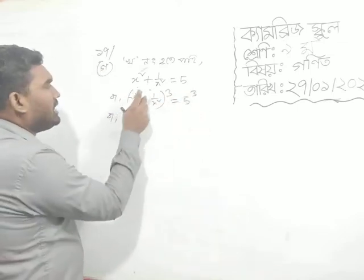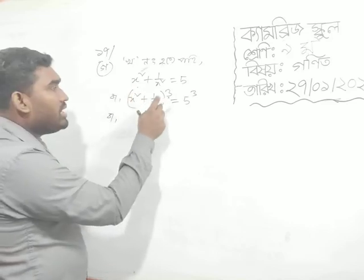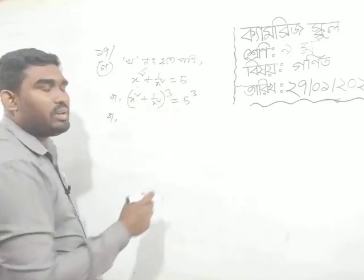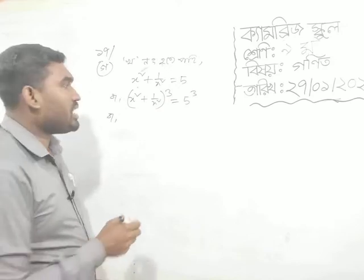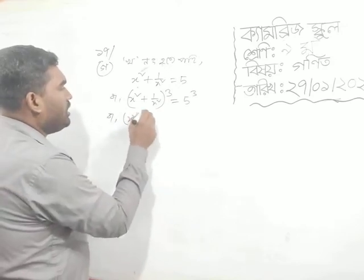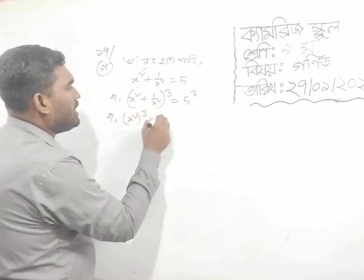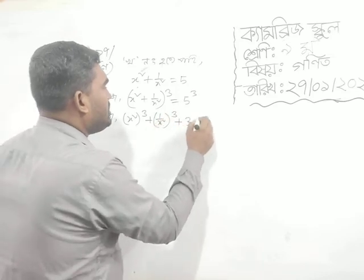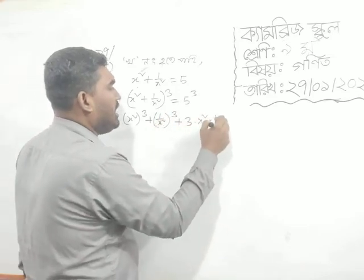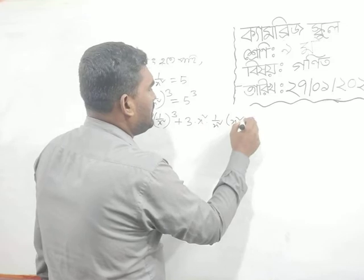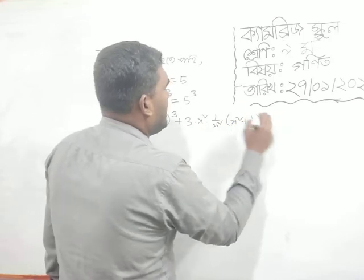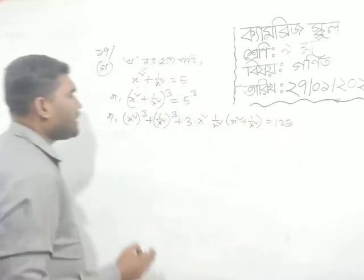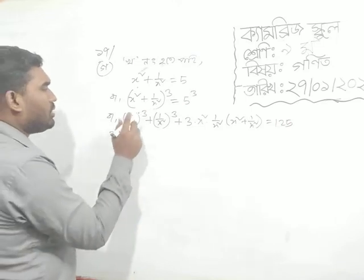We said A cubed plus B cubed equals A plus B times A squared minus AB plus B squared, which can also be written as A plus B to the cube minus 3AB into A plus B. So this is the formula we will use here.